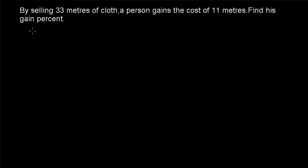Example number 2: by selling 33 meters of cloth, a person gains the cost of 11 meters — find his gain percentage. When you view it for the first time you will feel this question is similar to the previous one, but it is not. Here the person is gaining the cost price of 11 meters, whereas before he was gaining the selling price of 11 meters.